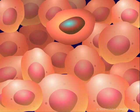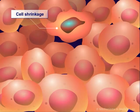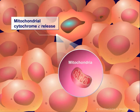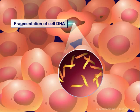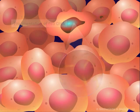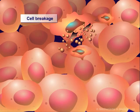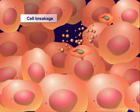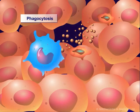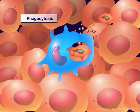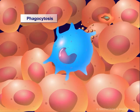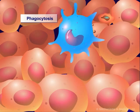Apoptosis is characterized by changes such as cell shrinkage, mitochondrial cytochrome C release, fragmentation of cell DNA into multiples of 180 base pairs, and the ultimate breakage of cells into small apoptotic bodies, which will be cleared through phagocytosis. Phagocytosis is a process where cells take in cell fragments or microorganisms in membrane-bound vesicles.